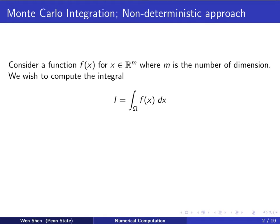The method computes an approximation to a definite integral by randomly choosing points at which the integrand is evaluated. This is called Monte Carlo integration. It belongs to a class of non-deterministic approaches.